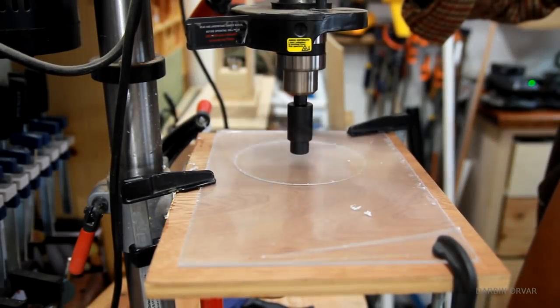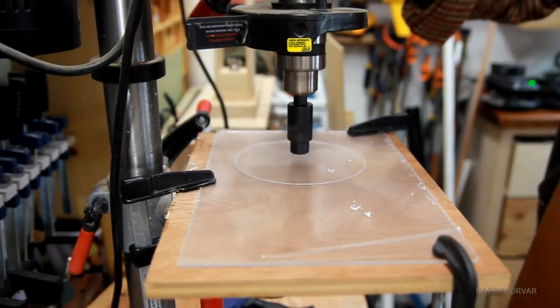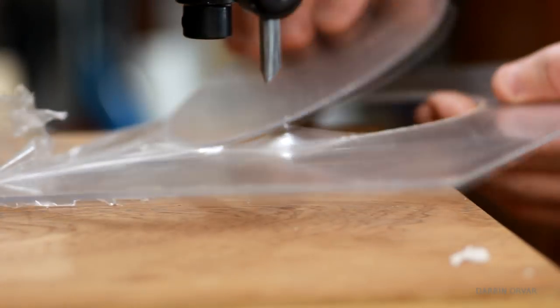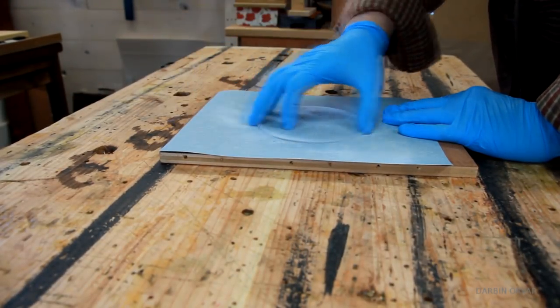Next up, the lexan. Using the fly cutter again to fully cut out the insert, but notice I did remove the bit because I did not want a hole in the plastic. And then sanding that to get more of a diffused look.